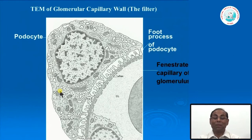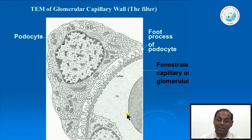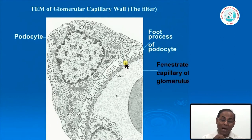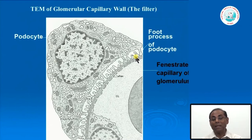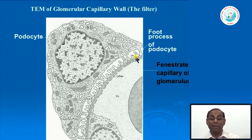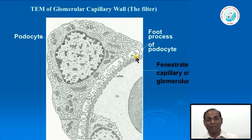Under electron microscopy, these structures are seen in detail. The endothelial cells are fenestrated. Below them is the glomerular basement membrane. The podocytes have an interesting structure not visible by light microscopy—the foot processes. These foot processes expand at the tip, like a foot with a shoe, and between two foot processes they are joined very tightly by the slit pore membrane. This is the main important structural feature maintaining the integrity of the glomerular filtration barrier.